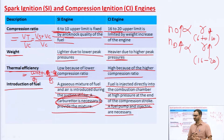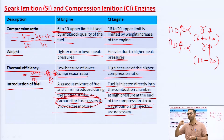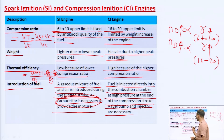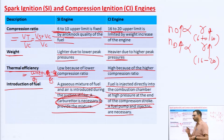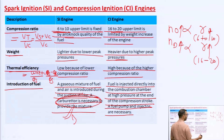In the case of the CI engine, during the suction stroke only air enters — not an air-fuel mixture — air alone enters. Fuel is injected at the end of the compression stroke, when the compression of air ends, with the help of a fuel pump and fuel injector. So the main difference is: in the SI engine, air-fuel mixture enters during suction stroke, whereas in the CI engine, air alone enters. One device uses a carburetor and spark plug, while the other uses an air filter, fuel pump, and fuel injector.